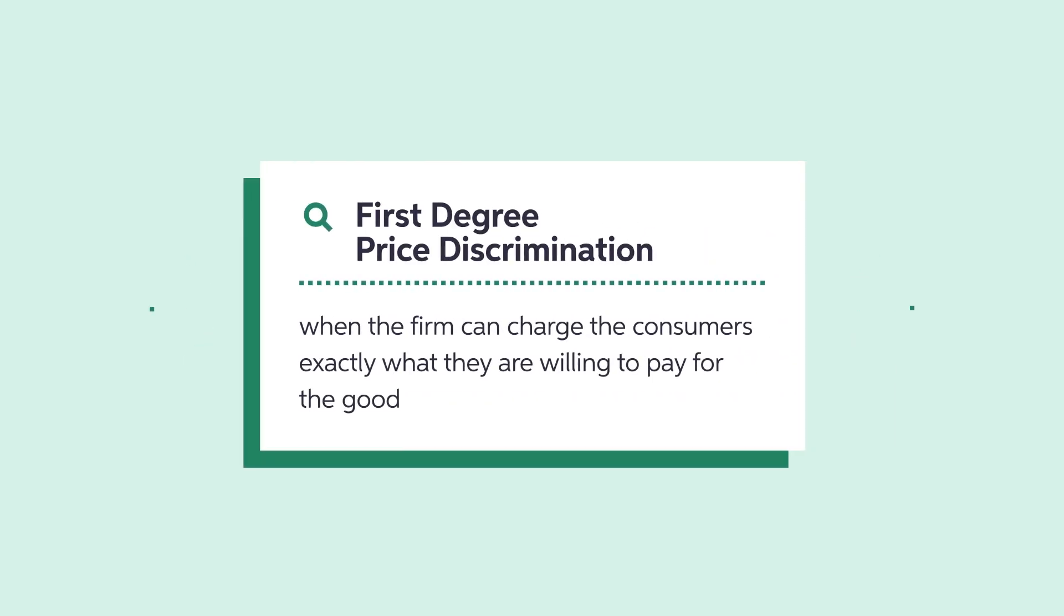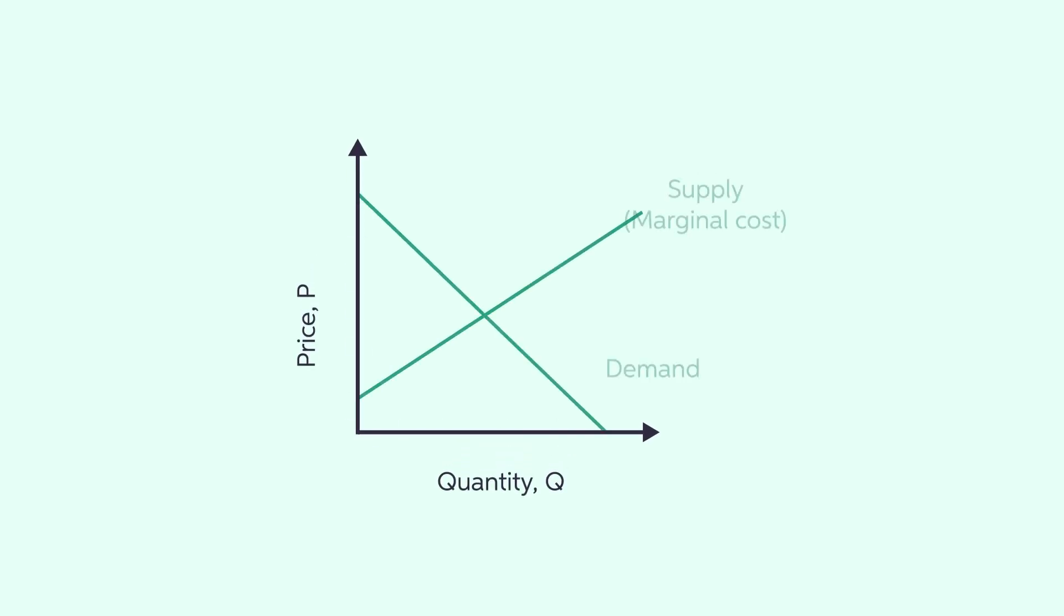First-degree price discrimination describes the most extreme form of market segmentation. If a monopolist knows how much each consumer would pay, it can charge its customers exactly what they would be willing to pay for the product. Here, consumer surplus is zero because there is no difference between what a buyer is willing to pay and what a buyer does pay.